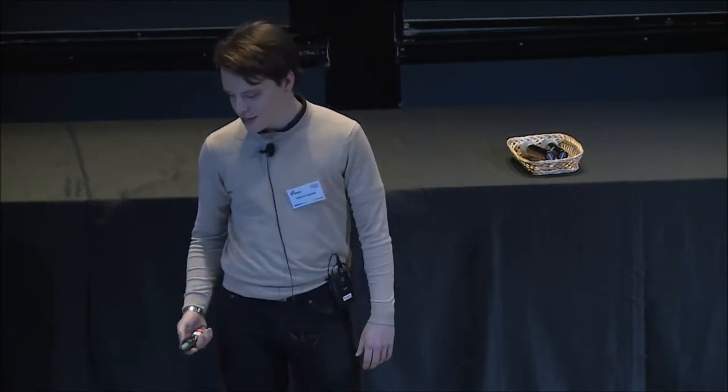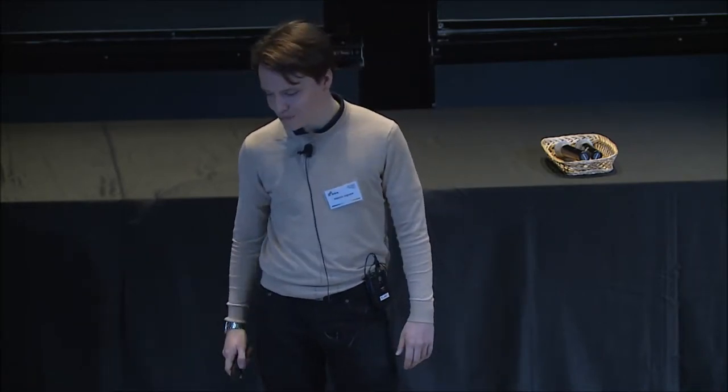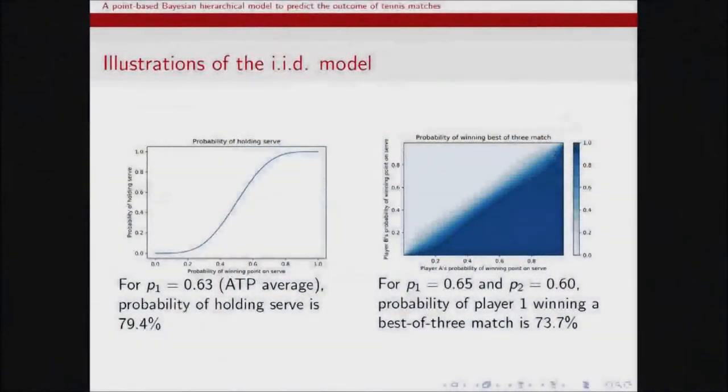I come now to point-based models — the class of models I'm going to talk about. They're kind of unique to tennis because they build on the IID model of tennis, developed among others by Newton and Keller. What that assumes is that points on serve in a tennis match are independent and identically distributed. Basically, the probability that you win a point on serve stays constant throughout the entire match — whether you're serving the first point or the last point, that probability is assumed constant. Maybe you can tell that seems a little suspect, but it's actually a pretty good approximation. And if you do make that assumption, the nice thing is that you can analytically calculate the probability of winning a set, a tie-break, holding serve, and so on, just with these two quantities.